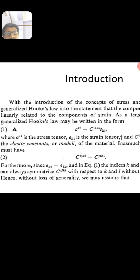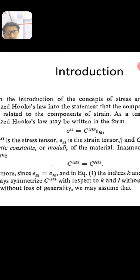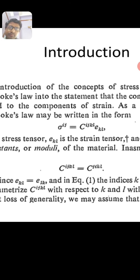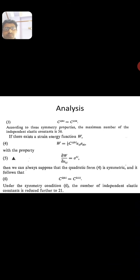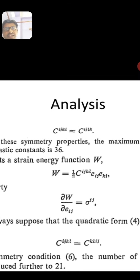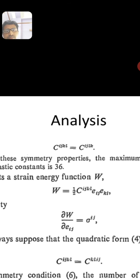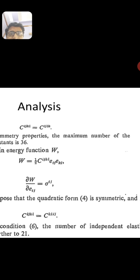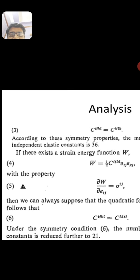Hence, without loss of generality, we may assume that σ_ij = C_ijkl ε_kl — a very important equation. C_ijkl = C_ijlk, and if you interchange, no change: C_ijkl = C_jikl. According to these symmetry properties, the minimum number of independent elastic constants is 36.